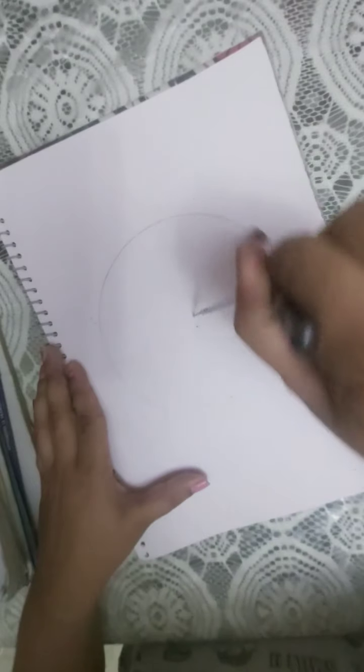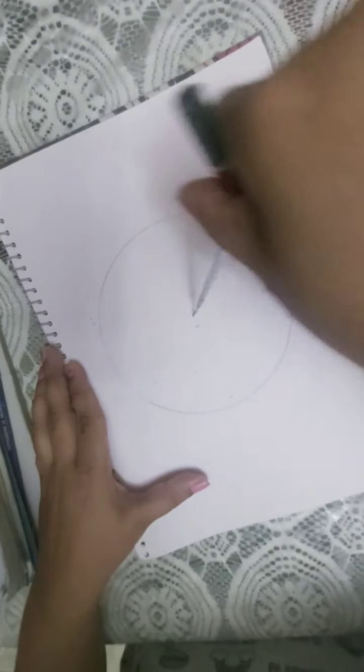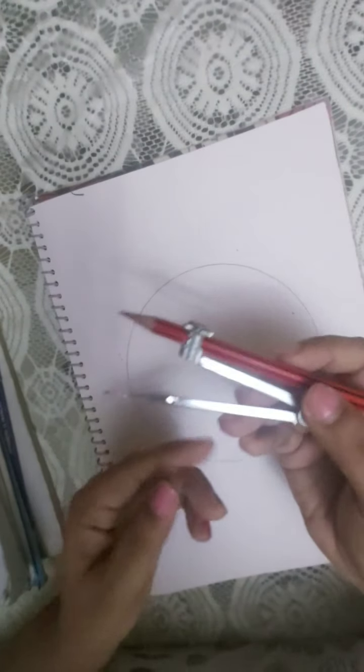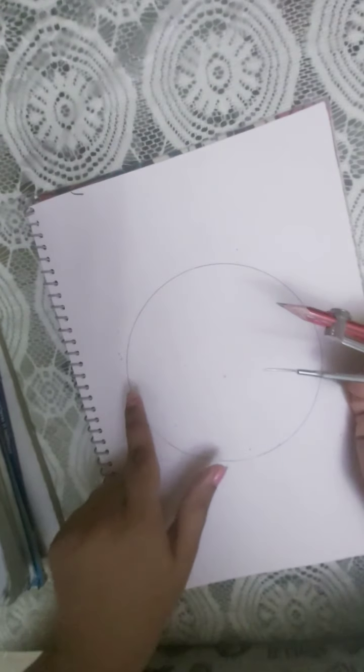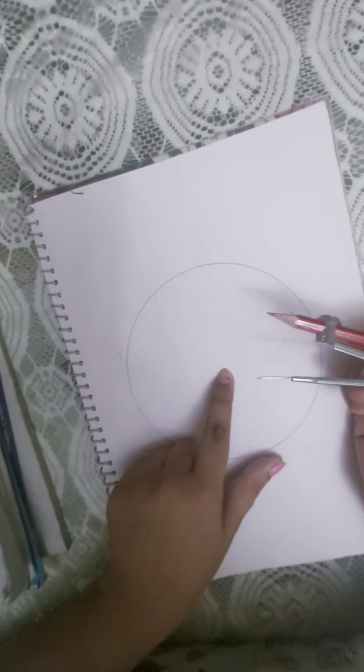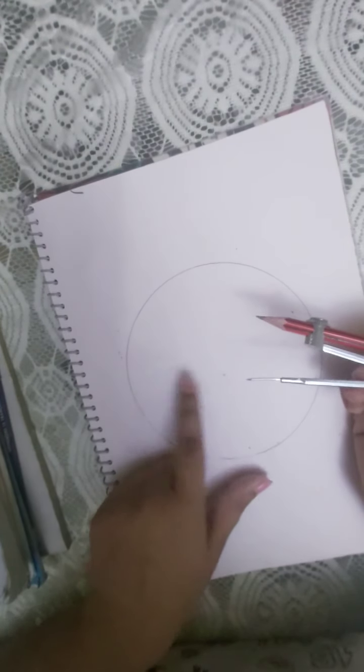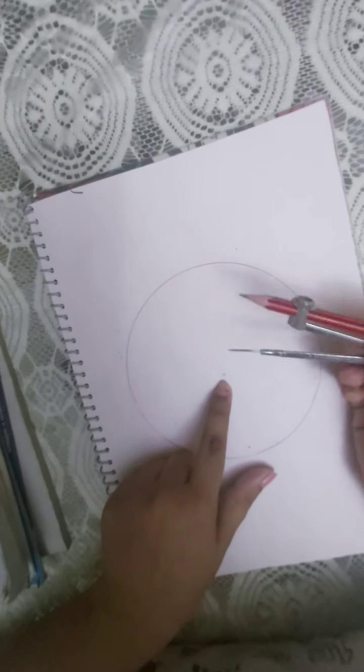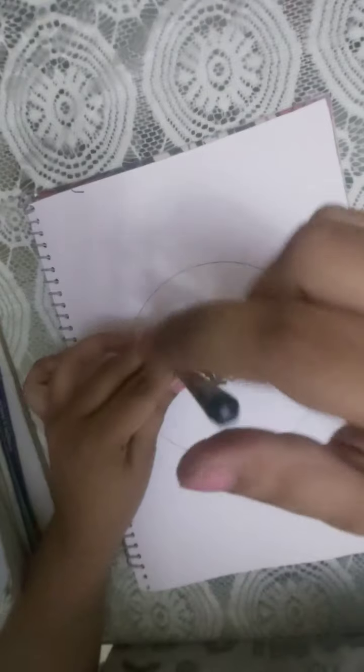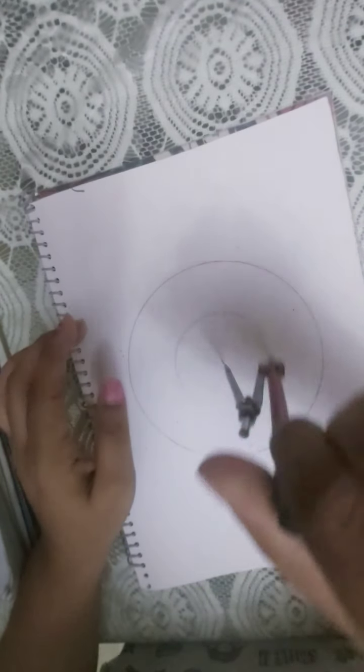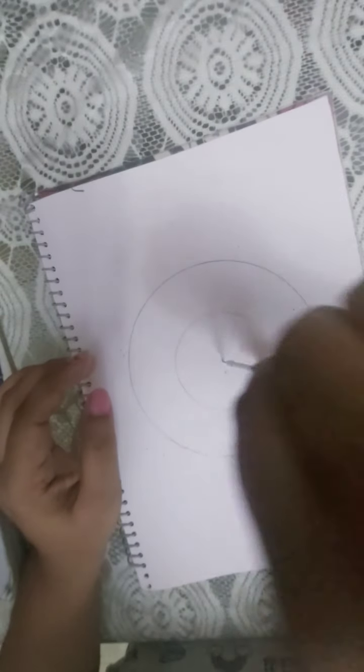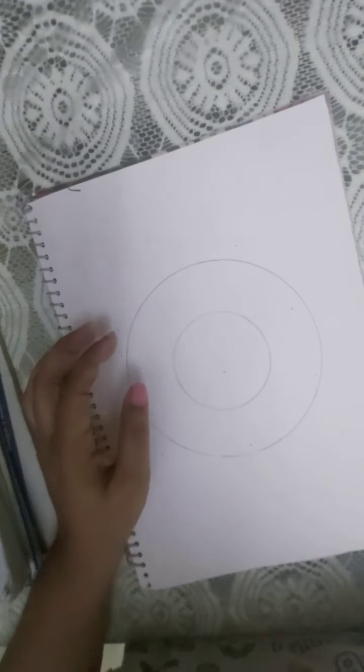So here I am. Now for the smaller circle you have to open the compass exactly half of the one you opened for the bigger circle. For example, if the bigger circle radius is 8 centimeters, then the smaller circle radius should be 4 centimeters. It should be exactly half. So I am making a smaller circle. So here it is, my smaller circle.